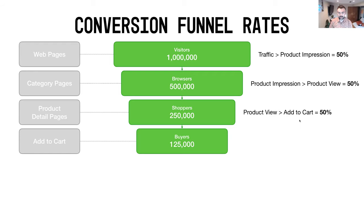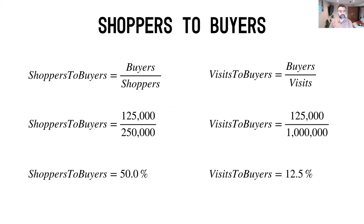To do the math, it's quite simple. On the left-hand side, we've got shoppers to buyers. All we're doing is taking our buyers over our shoppers. In our example, we had 125,000 buyers over 250,000 shoppers — those are the number of people that added to cart versus the number of people that just visited product pages. This is currently sitting at a 50% conversion rate.